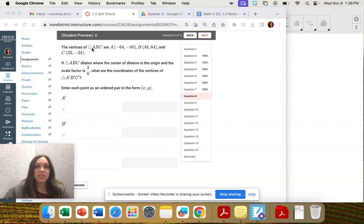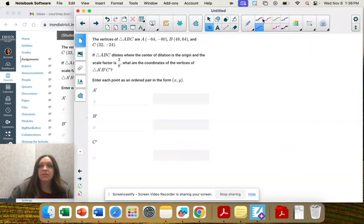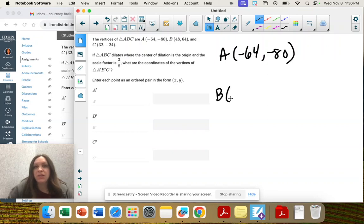Question 8, we have the vertices of triangle ABC. So A is negative 64, negative 80. B is 48, 64. And C is 32, negative 24.